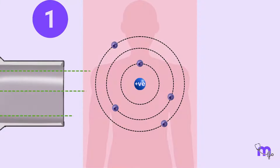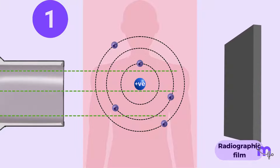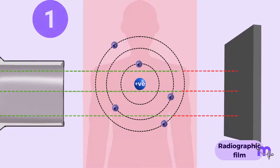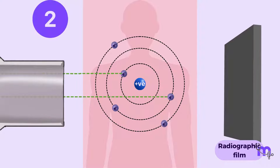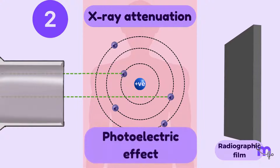Some of the X-rays penetrate the tissues to reach the film. Some of the primary photons get completely absorbed or attenuated by the patient tissue by a process called the photoelectric effect.